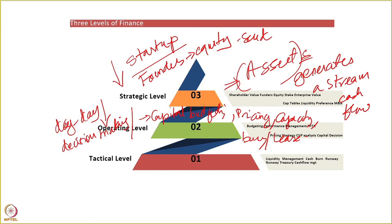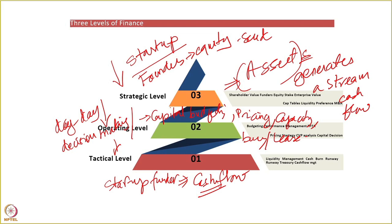The third level in which finance helps is the tactical level. For a startup founder, the biggest concern most times is whether he has enough cash to run his business. Cash flow is the key. Managing cash flow on a month-to-month, week-to-week, and even day-to-day basis for survival is the first objective. You may have the best plans, but if you don't have the cash, you'll pretty much run out of business. Finance gives you the ability to manage your liquidity.